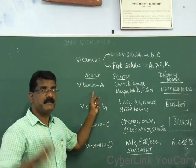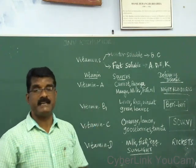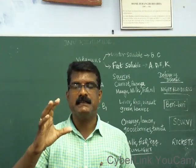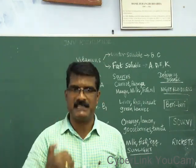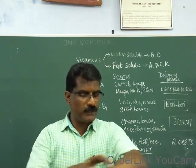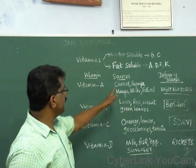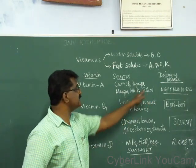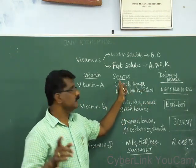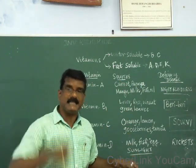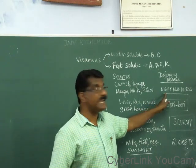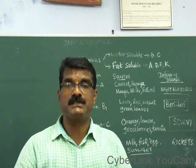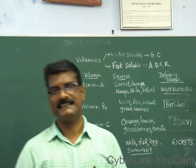Vitamin A is very important because it is needed for sound vision. If you want to have a very good eyesight, you must take a lot of vitamin A-rich food. Vitamin A is also good for keeping your skin healthy. Carrot, papaya, mango, milk, and fish oil are all sources of vitamin A. If vitamin A is less in our diet, that leads to a disease known as night blindness.